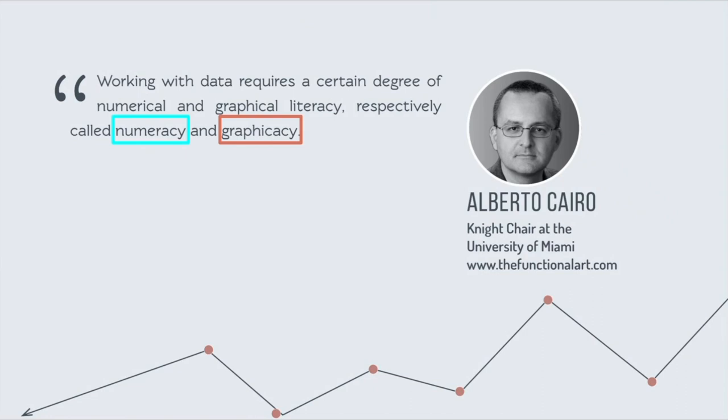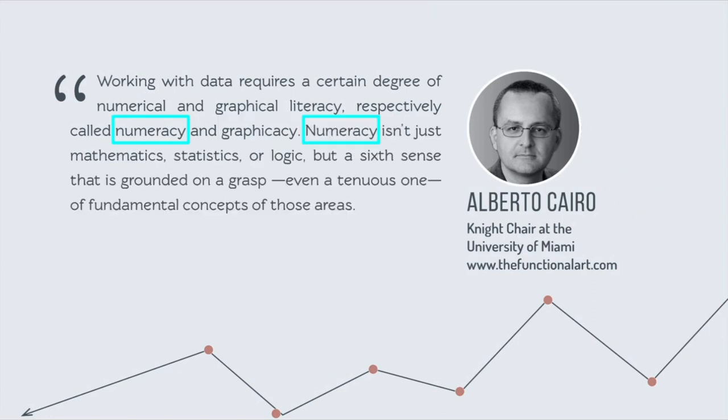First of all, what is innumeracy? Well, the opposite of that would be numeracy. Alberto Cairo, who's on our board, gave us this great quote for our book, 17 Key Traits of Data Literacy. He talks about how working with data requires a certain degree of numerical and graphical literacy, respectively called numeracy and graphicacy. And then he goes on to define numeracy — not just being about math, stats, and logic, but even this sixth sense grounded on a grasp, even a tenuous one, of the fundamental concepts of those areas.